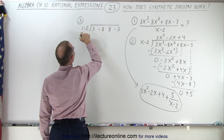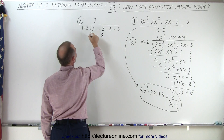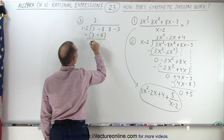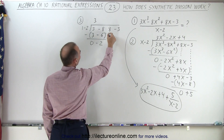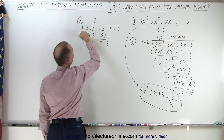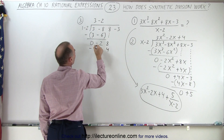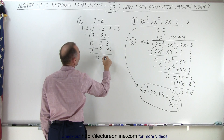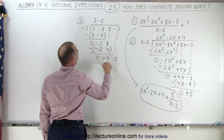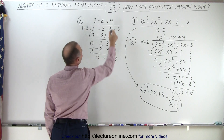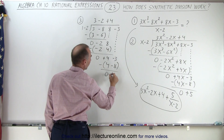We do the same thing now. What times 1 gives us 3? The answer is 3. 3 times 1 gives us 3, and 3 times negative 2 gives us negative 6. We subtract: 3 minus 3 is 0, and a minus times a minus is plus 6, added to minus 8, which gives us minus 2. We drop the next term, 8. What times 1 gives us negative 2? The answer is negative 2. Negative 2 times 1 is negative 2, negative 2 times negative 2 is positive 4. We subtract and end up with 0; 8 minus 4 is plus 4. Then we drop the last term, minus 3. What times 1 gives us 4? The answer is plus 4. 4 times 1 is 4, and 4 times negative 2 is negative 8. We subtract and end up with 0, and minus 3 minus negative 8 gives us plus 5.